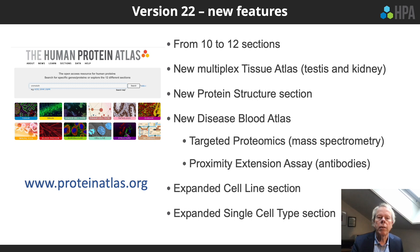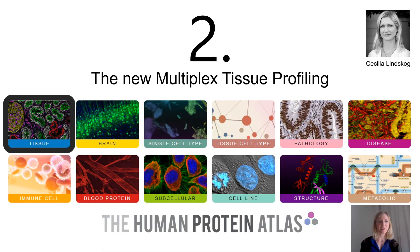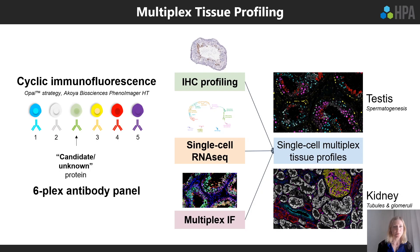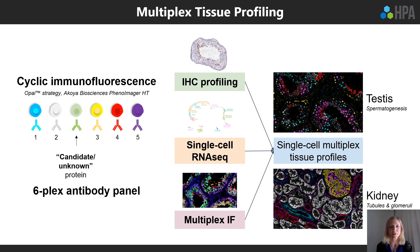Cecilia Linskog presents a new multiplex tissue profiling that adds more detailed data to the tissue section. The workflow is built upon six-plex immunofluorescence, with a panel of five markers outlining specific structures in different tissue types. We combine this five-plex panel with an unknown protein that we want to map to a particular structure, with candidates chosen based on existing immunohistochemistry data from the Human Protein Atlas and reanalysis of single-cell RNA sequencing data.